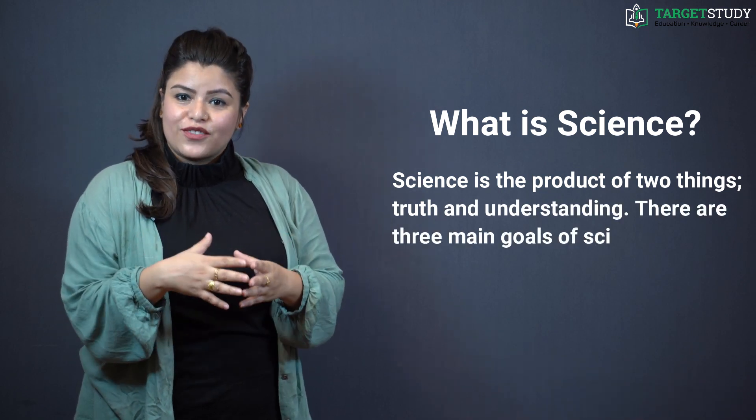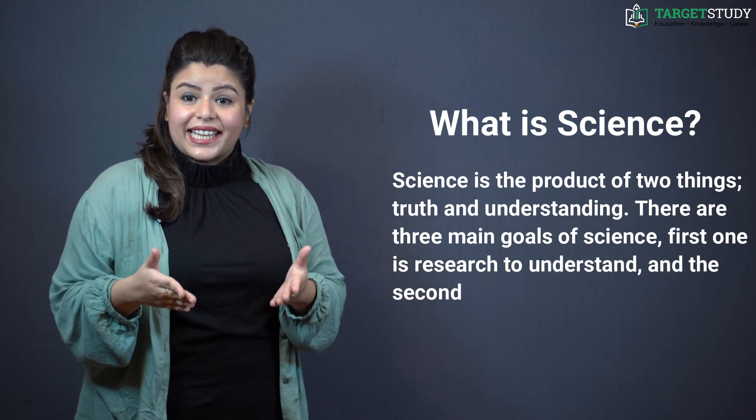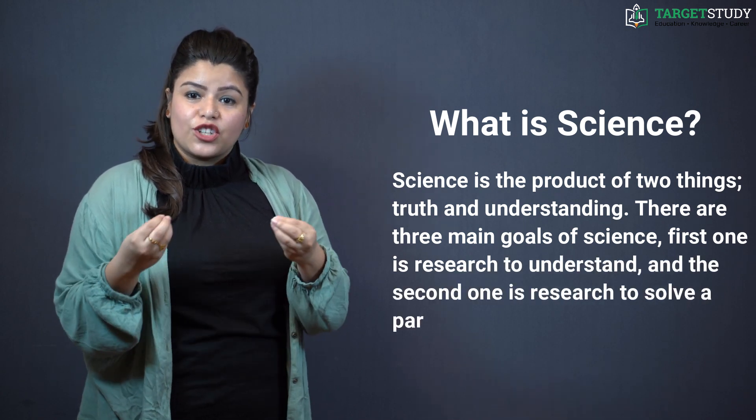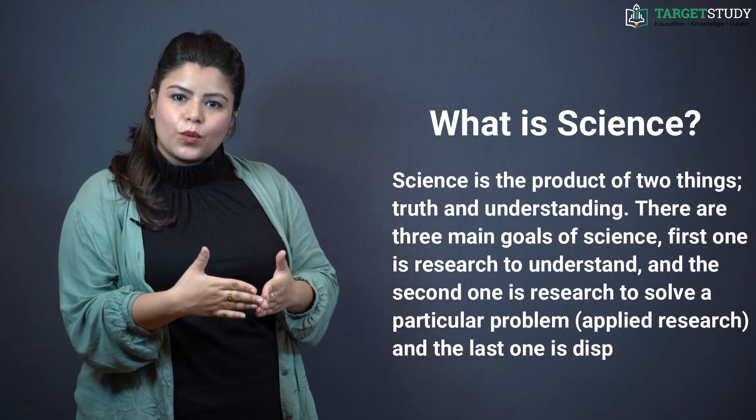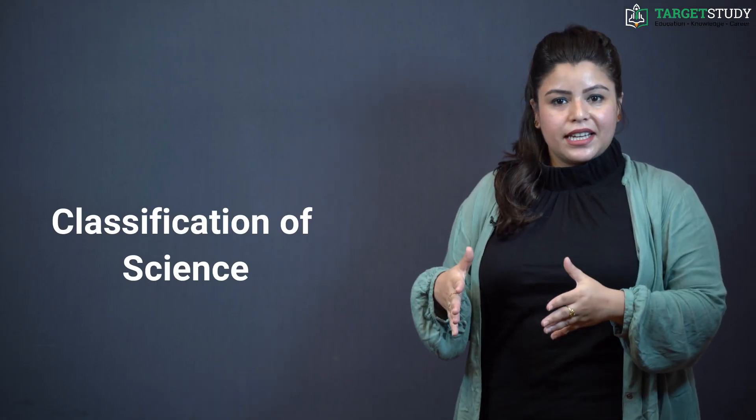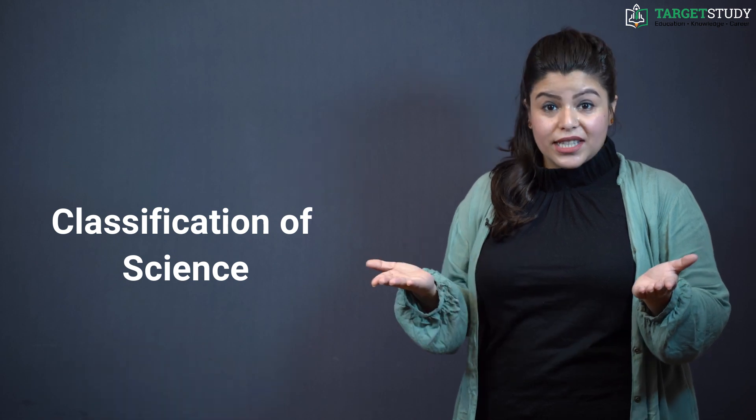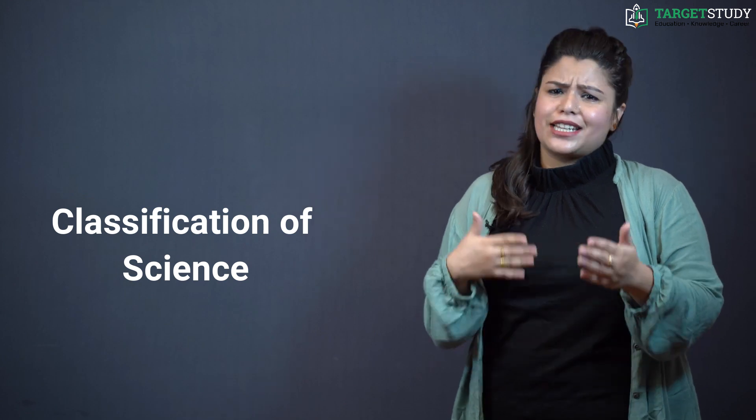There are three main goals of science. First one is research to understand. Second is the research to solve a particular problem, that is applied research. And the last one is dispensing solutions. The study of science is classified into various types: natural sciences, social sciences, behavioral sciences, applied sciences and health sciences.